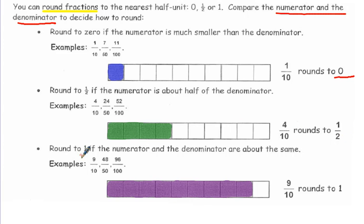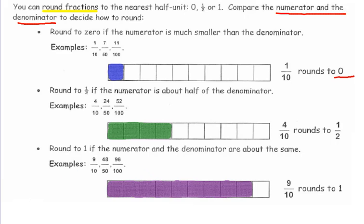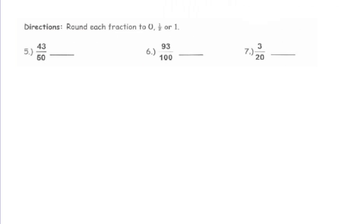Round to 1 if the numerator and the denominator are about the same. So 9 out of 10 would round to 1, or 48 out of 50, or 96 out of 100. Let's try it — round each fraction to 0, half, or 1.